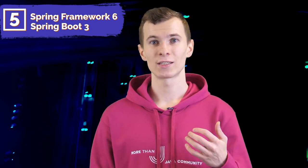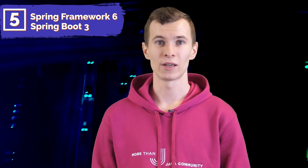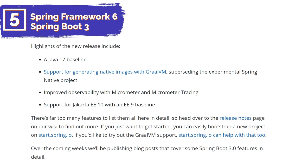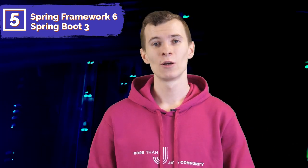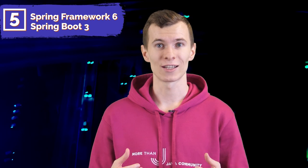Spring Boot 3 is now generally available too. It is the first GA version of Spring Boot that provides support for Spring Framework 6 and GraalVM. Highlights of the new release include a Java 17 baseline, support for generating native images with GraalVM, improved observability with Micrometer and Micrometer Tracing, and support for Jakarta EE 10 with an EE 9 baseline. We will drop the link in the description with the release notes of Spring Boot 3. Please let us know in the comments when you are going to update your Spring dependencies to the latest versions.